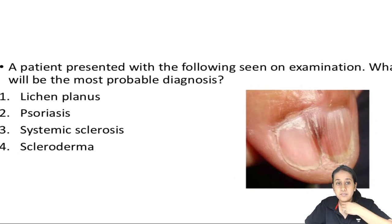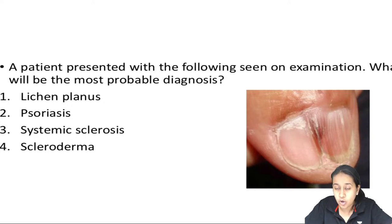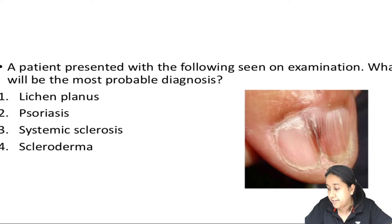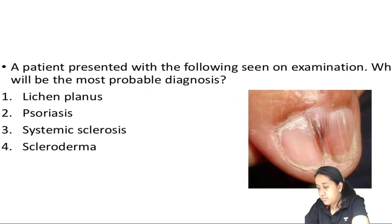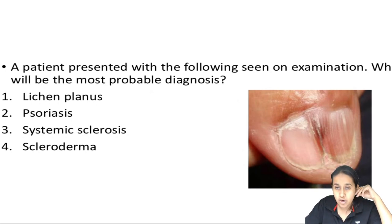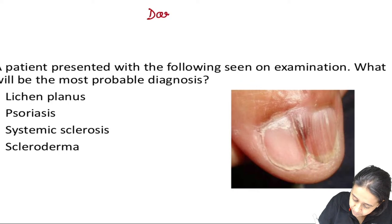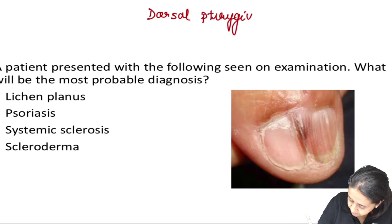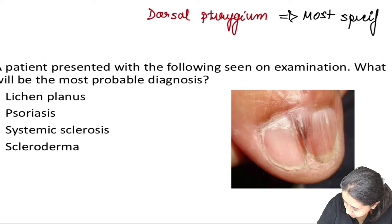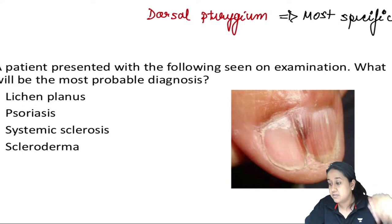A patient with the following nail feature - what is the probable diagnosis? This is a very classical image of dorsal pterygium. Please remember, dorsal pterygium is one of the most specific nail changes of lichen planus. Dorsal pterygium is the most specific feature.